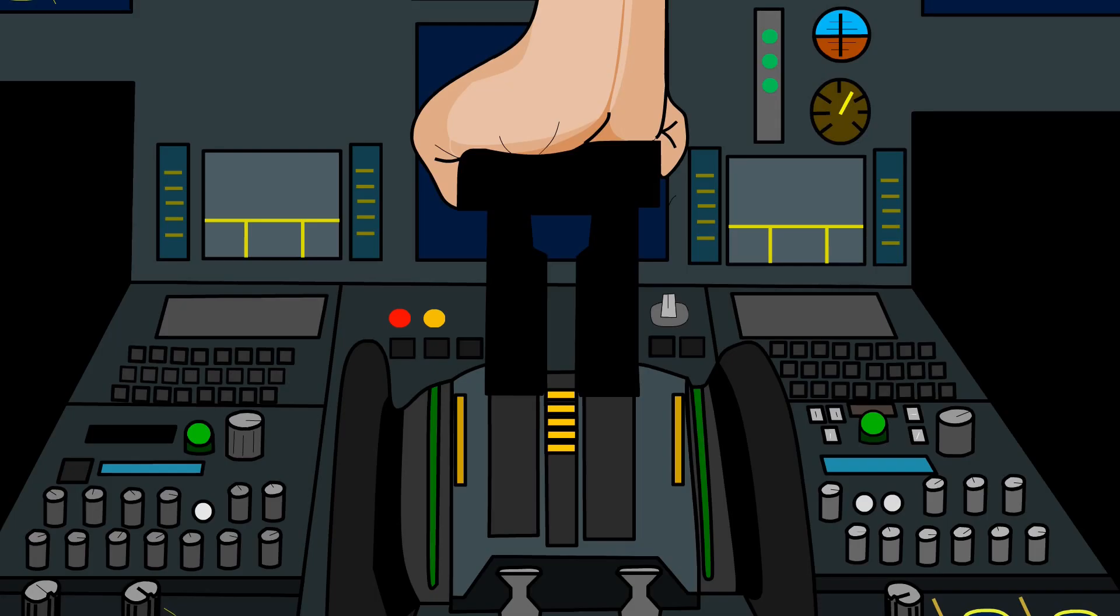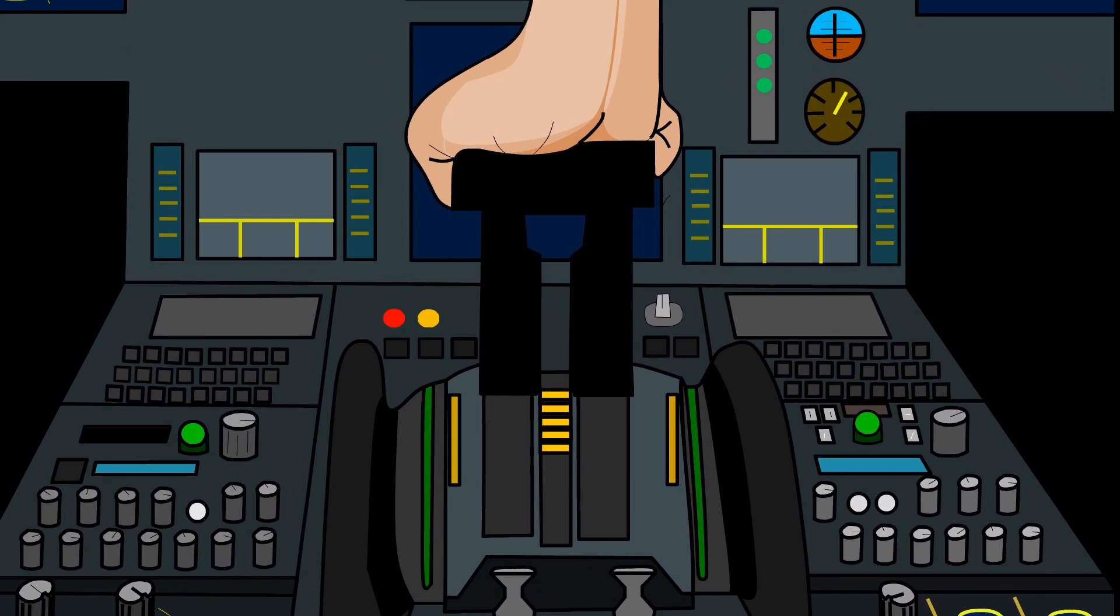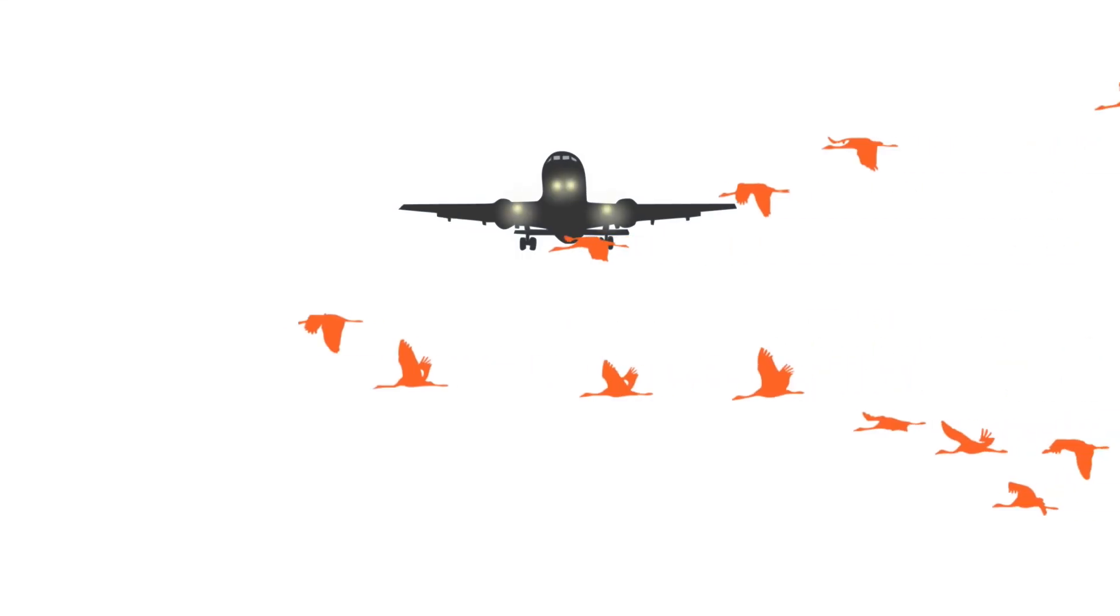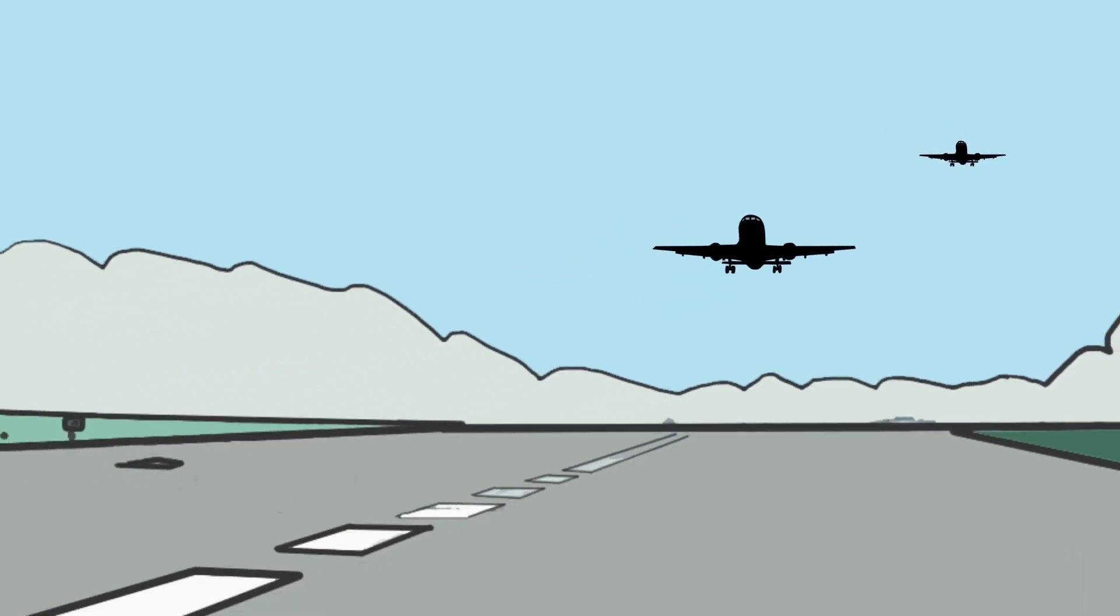In addition, there are some unpredictable factors such as aircraft instability, confrontation with a flock of birds, failure of the controller's separation, and runway incursion.